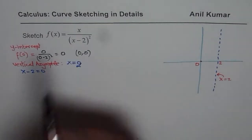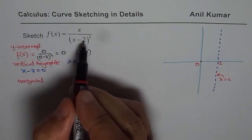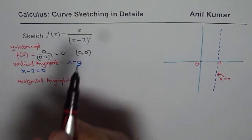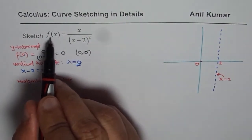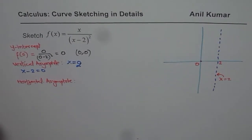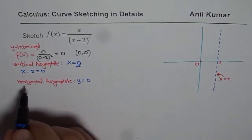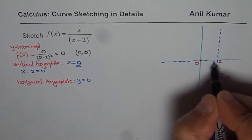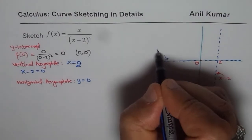Now let us look at the horizontal asymptote. Since the degree of the denominator is higher than the numerator, as x approaches positive or negative infinity the function approaches 0. So we do have a horizontal asymptote at y = 0. Let me sketch this as a dotted line along the x-axis representing our horizontal asymptote.